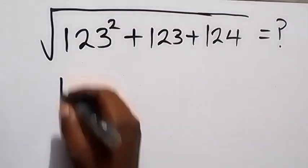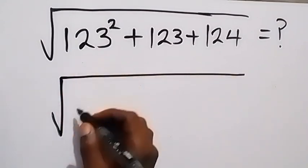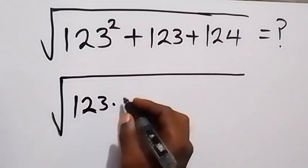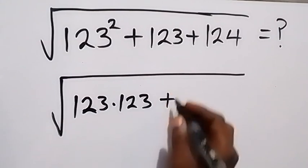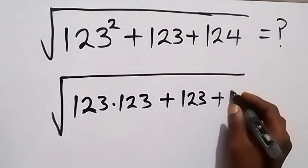From here, we can write this again as square root of 123 squared is written as 123 times 123, then plus 123 plus 124.